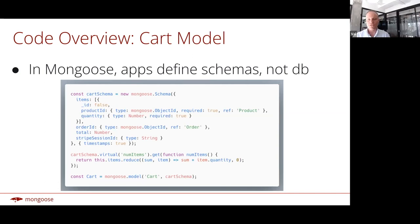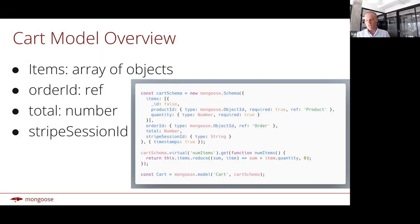Here's a quick overview of what a cart looks like in Mongoose — this is the cart schema for the e-commerce sample app. In Mongoose, applications define schemas, not the database. A schema configures a model. A cart has four properties: items, which is an array of objects where each item has a product ID and a quantity; order ID, which is a reference to an order once you've checked out; total, which is the total cost of the items in the cart; and the Stripe session ID, which stores the ID of your current checkout session in Stripe.